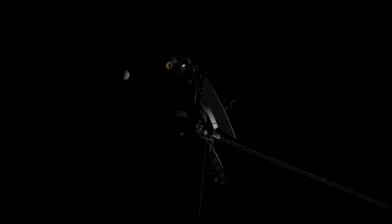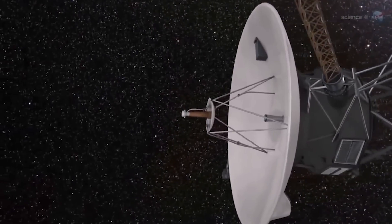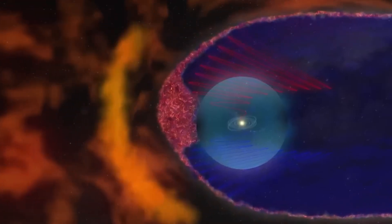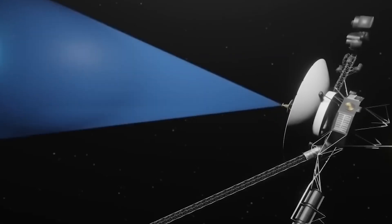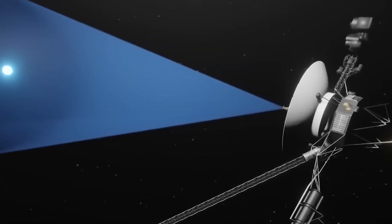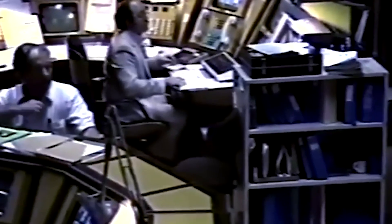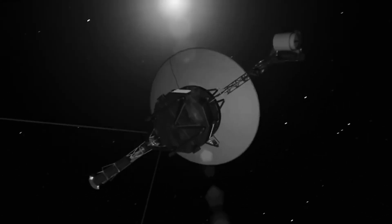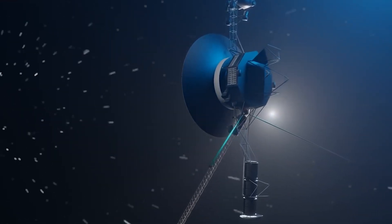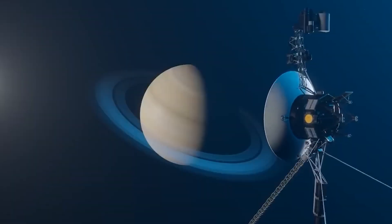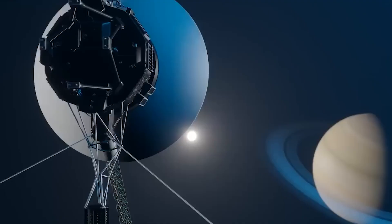However, there was only one problem to consider. Voyager 1 had been built decades ago and had been performing excellently up to that point. Therefore, finding a solution to current problems would be a major challenge. It was necessary for them to review several manuals from the 1970s, and that is exactly what they did. After careful examination, they found a simple solution to the problem by restoring the system responsible for data transmission. In this way, they managed to fix the problem without affecting any other part of the ship.